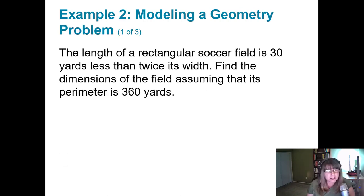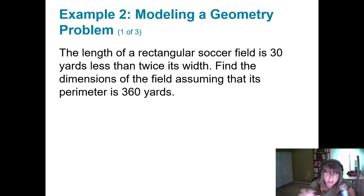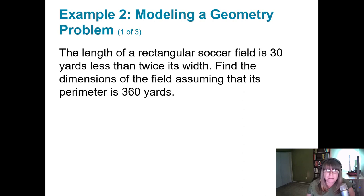Let's take a look at another problem — this time a geometry problem. Sometimes with geometry problems you'll have to rely on knowledge you already have and not just information from the problem. The length of a rectangular soccer field is 30 yards less than twice the width. Find the dimensions of the field assuming its perimeter is 360 yards.